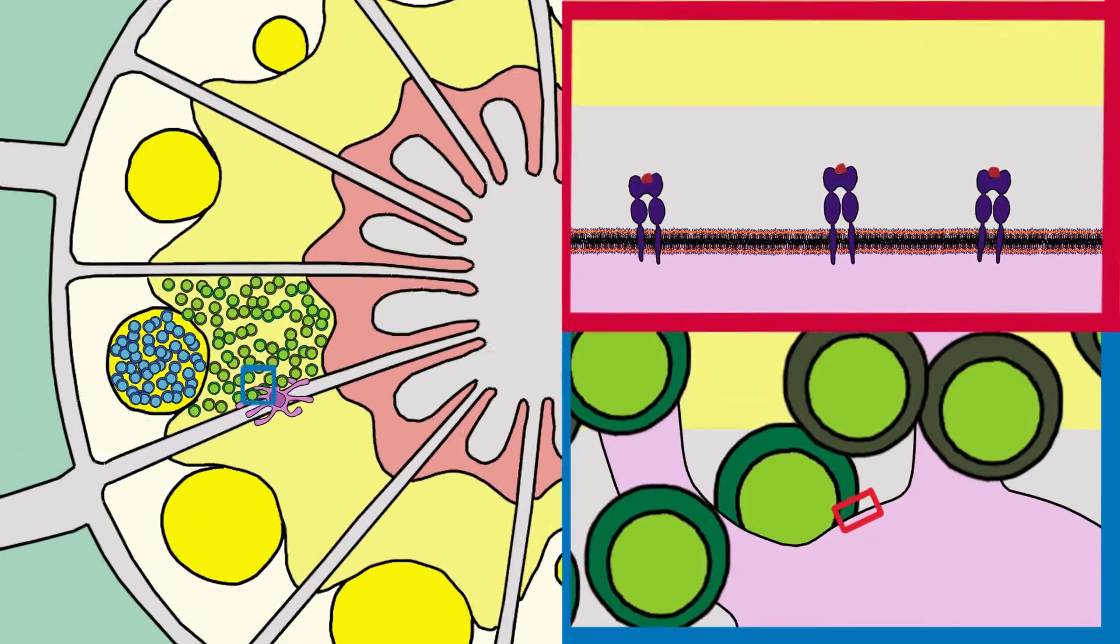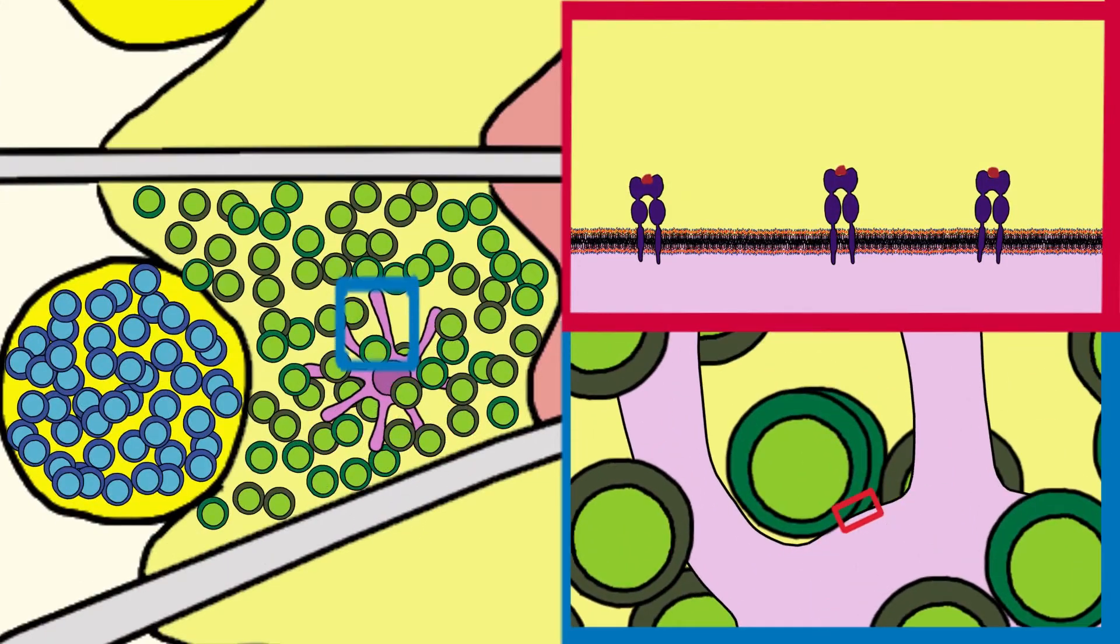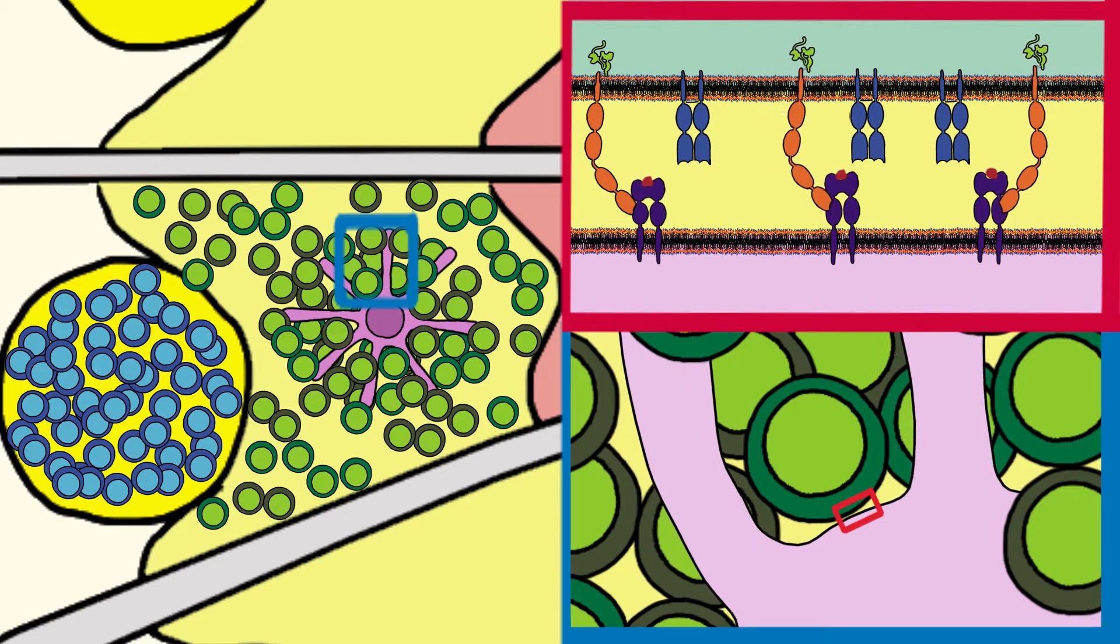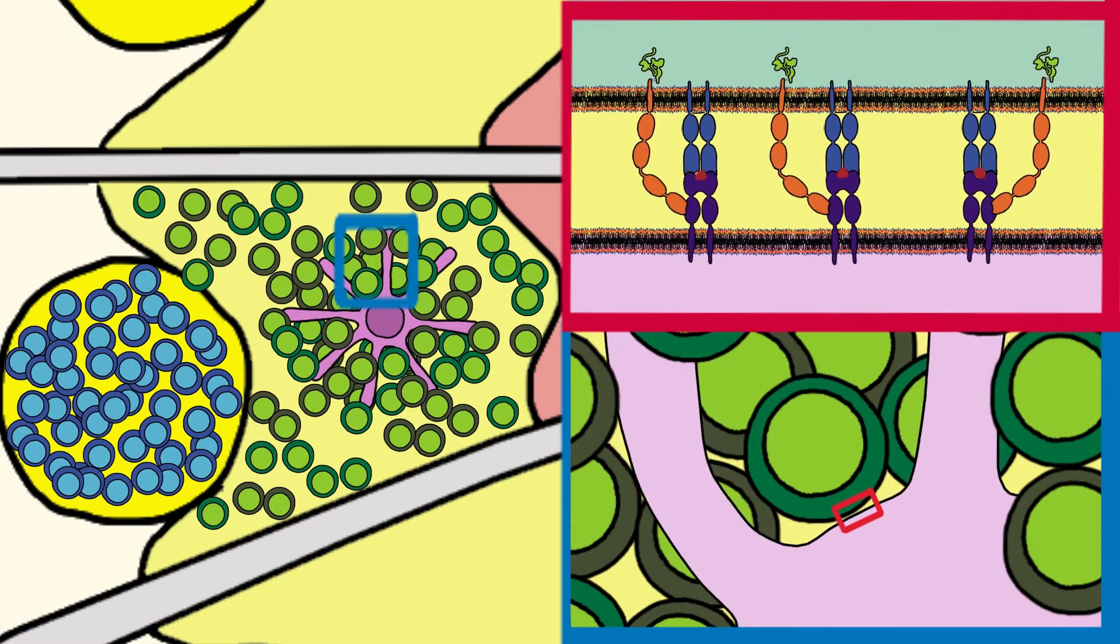Once in the ganglion, it goes to the T cells, which surround the dendritic cell to see if its receptors match the samples it brought. This is the beginning of the adaptive response.